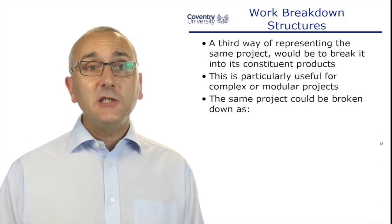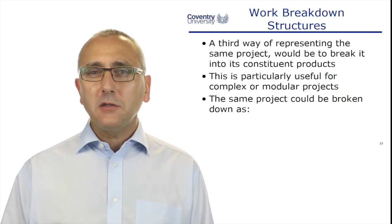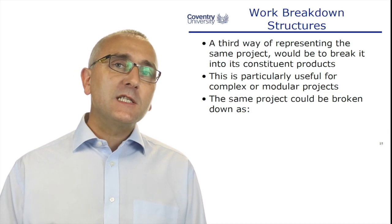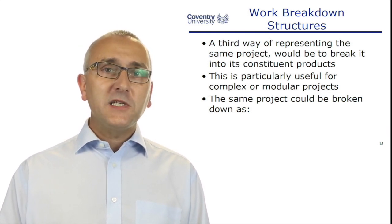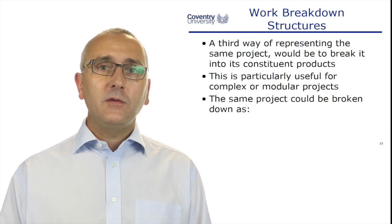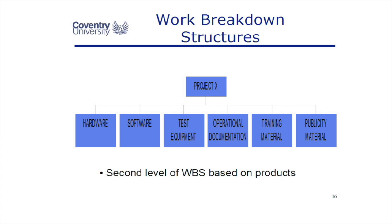There's a third way: breaking the project down into its constituent products. For very technical or modular projects, this can be the best way to go. For instance, a mobile phone could be broken down into software, packaging, training material, battery supply, GPS system, and camera. So project X could have work packages of hardware, software, test equipment, and training material. There's no right or wrong way — if all students were given the same project, they'd all create different work breakdown structures and they could all be right. The main question is: have you included everything that needs to be done to deliver this project?